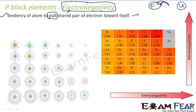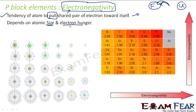Electronegativity is nothing but a tendency to pull a shared pair of electrons towards itself. This depends on the size of the atom and the electron hungerness — atom size and charge. There is a capability and the hungerness, which is the desire. So it's based on capability and desire.